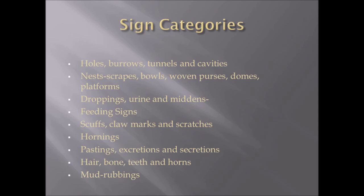Sign categories include holes, burrows, tunnels and cavities; nests which might include scrapes, bowls, woven purses, domes and platforms; droppings, urine and middens; feeding sign; scuffs, claw marks and scratches; hornings; pastings; excretions and secretions; hair, bone, teeth and horns; and mud rubbings.